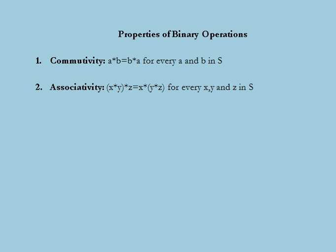Another property of binary operations is associativity. A binary operation denoted by star is said to be associative on set S if and only if (X star Y) star Z equals X star (Y star Z) for every X, Y, and Z in S. Both addition and multiplication in the real number system are defined as associative operations.